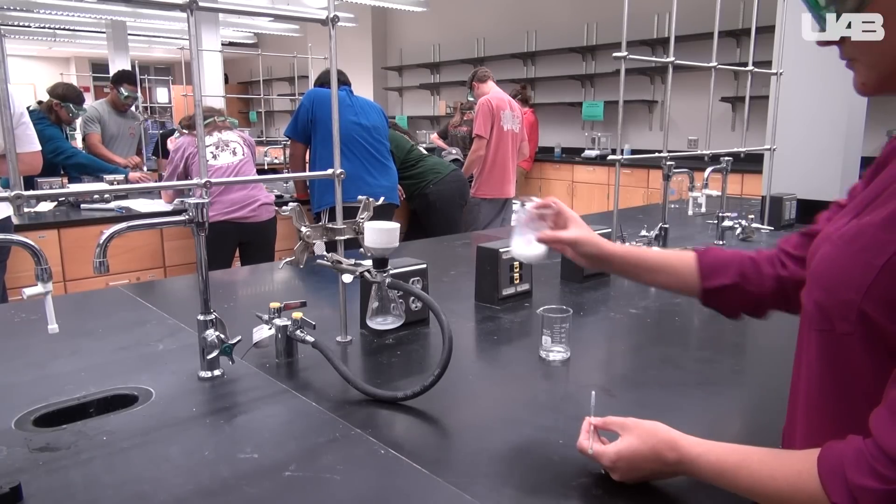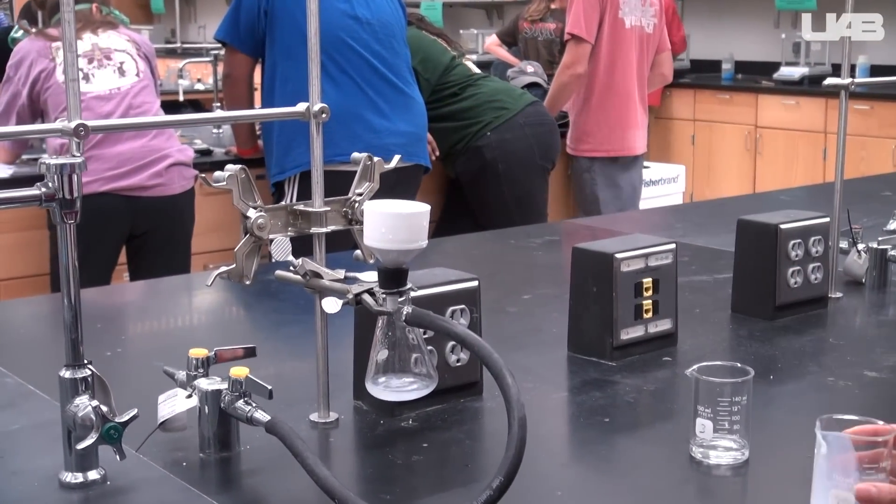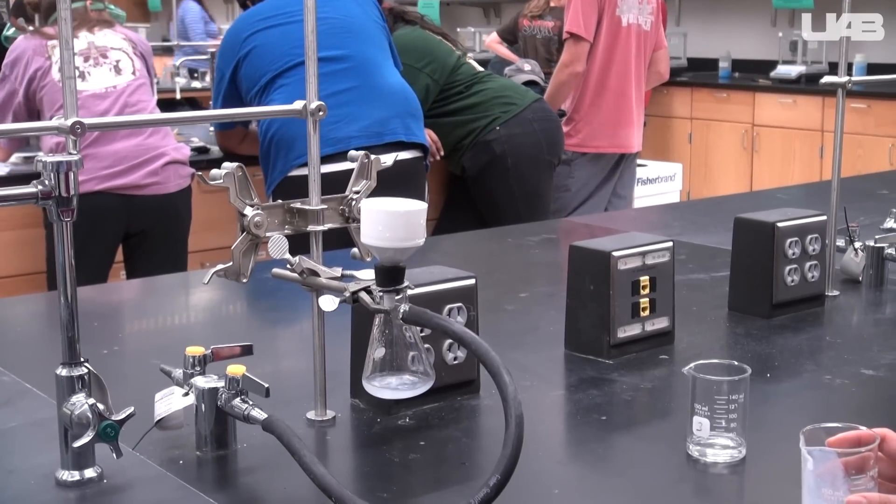Use the Buchner funnel to filter the precipitate. If you did not calculate the correct amount of ammonia, you will have a difficult time getting all of the liquid to flow through.